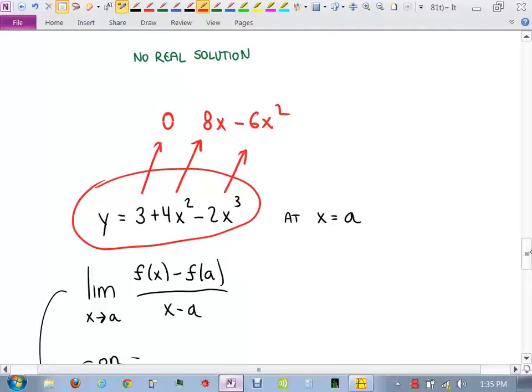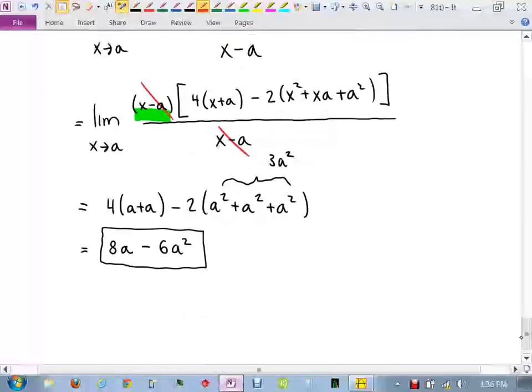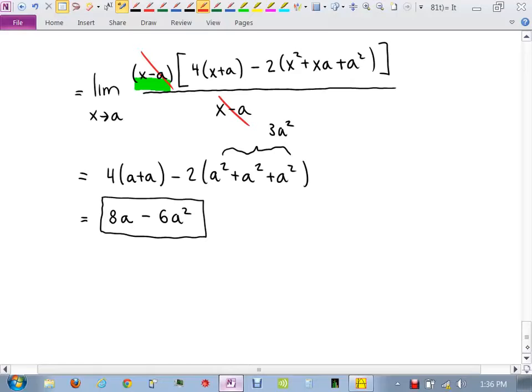On the test, I will tell you, if I want you to use the limit definition, I will say, use the definition of the derivative to find blah. If I do not say it, you can use this. But I would check your answer. Like if I were doing this on a test and I got 8a minus 6a squared, I would check by doing the derivative using the rule. They should be the same. I mean, of course, a here and x up there. Can you take the problem the rest of the way? I mean, now it's just plugging in points to figure out your tangent, right? Yes or no? You want me to? We're good? Okay.